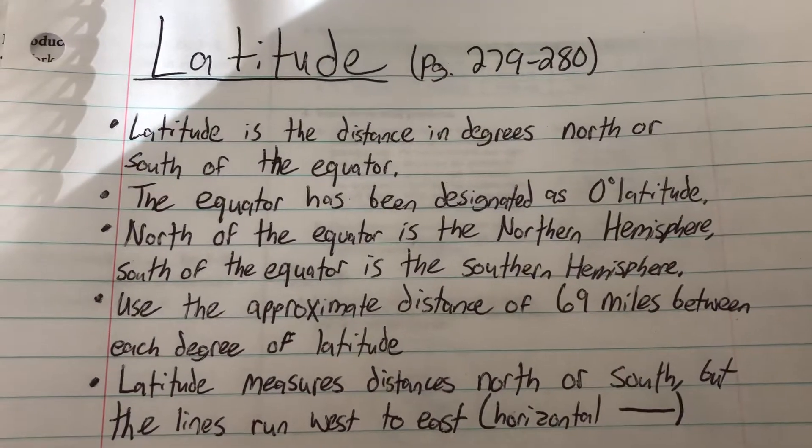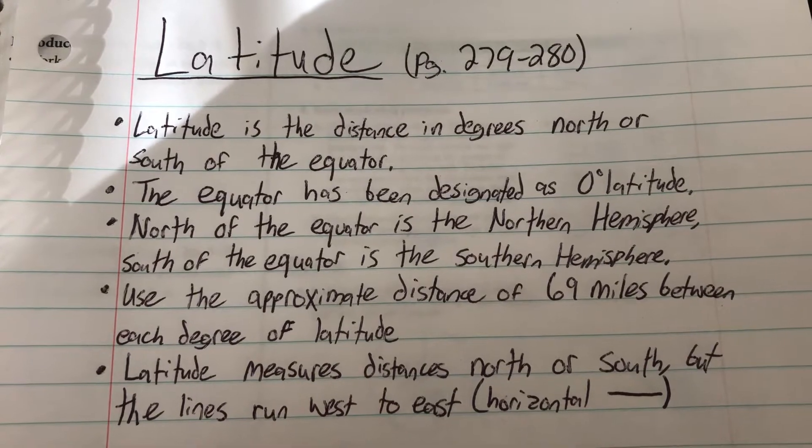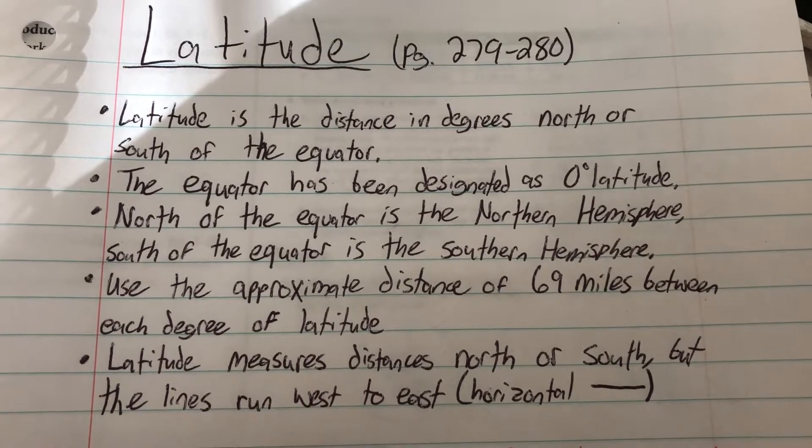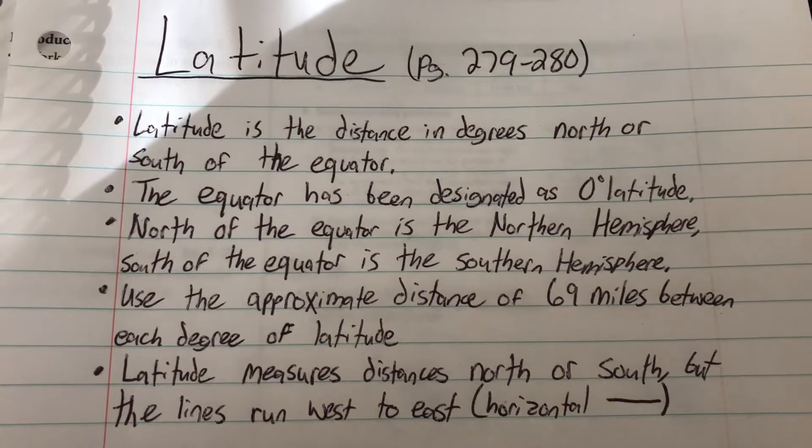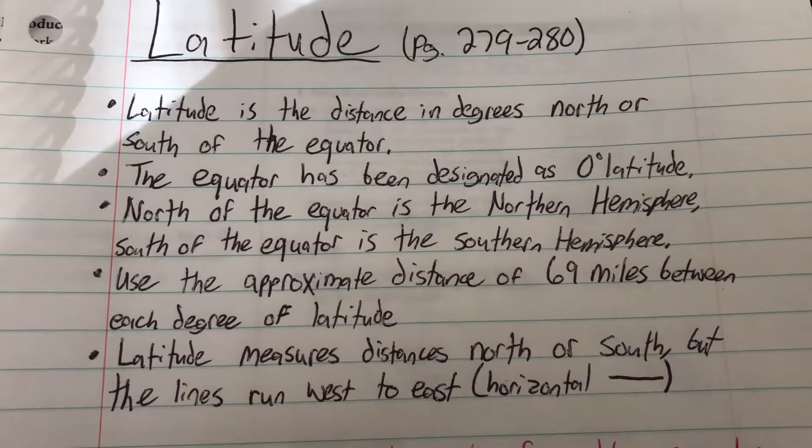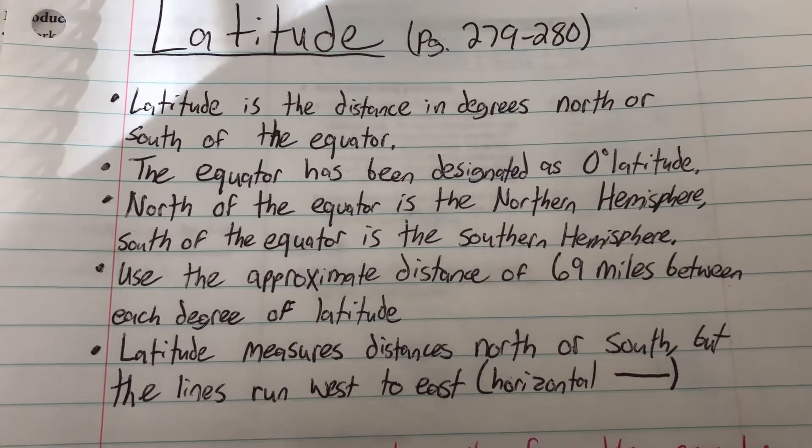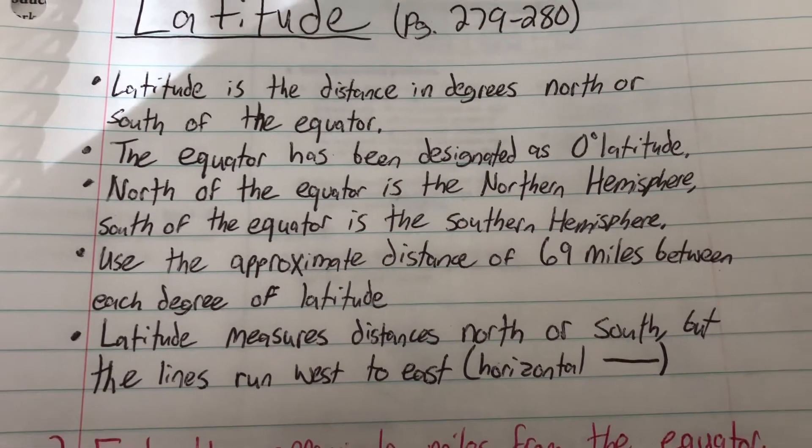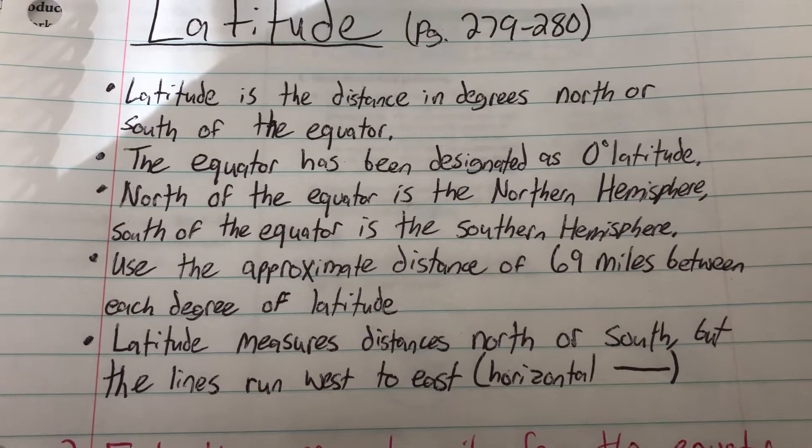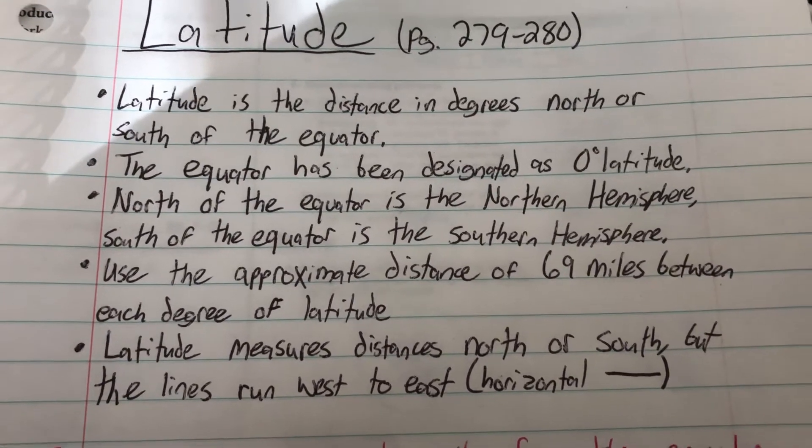Latitude is the distance in degrees north or south of the equator. The equator has been designated as zero degrees latitude. North of the equator is the northern hemisphere, south of the equator is the southern hemisphere. There is approximately 69 miles between each degree of latitude. Latitude measures the distances north or south of the equator but the lines run west to east so they're horizontal lines.